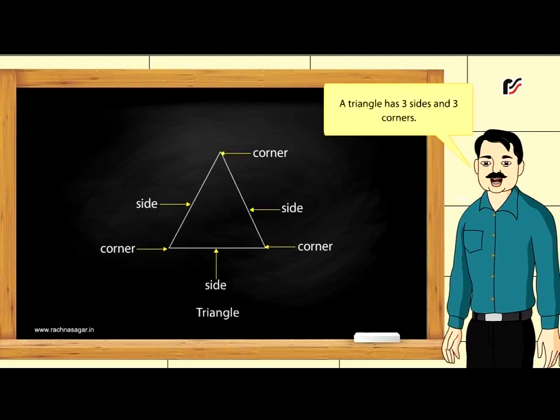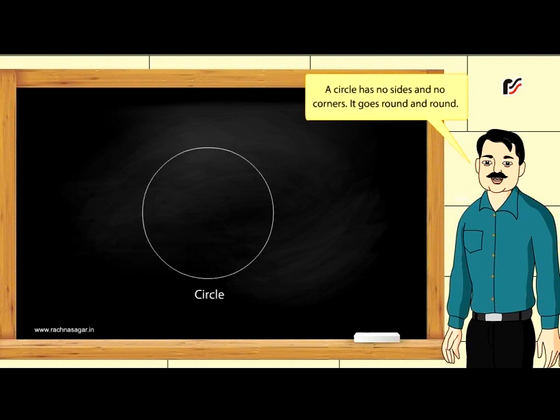A triangle has three sides and three corners. A circle has no sides and no corners. It goes round and round.